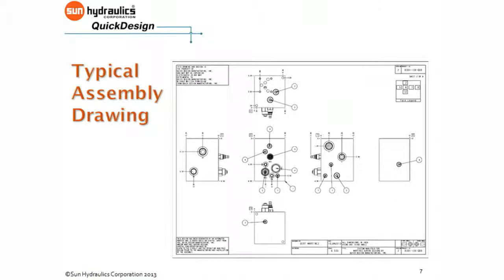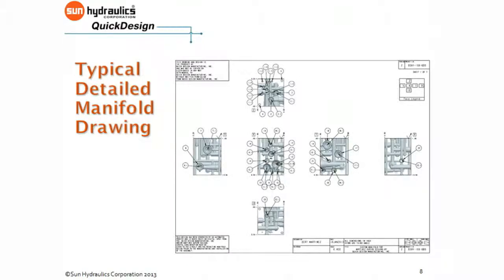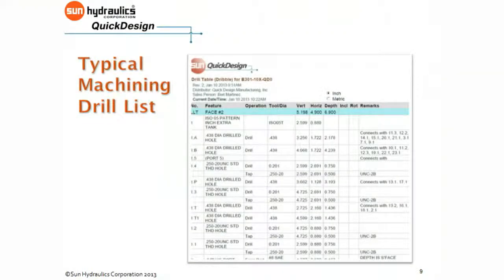Deliverables of Sun Quick Design are complete and include everything you need to determine suitability of the design and control of your manufacturing choices. Deliverables include a full set of assembly drawings as well as a full set of body drawings so you can see the internal passageways inside the block. Outputs also include a drill list that provides all the information needed to manufacture the manifold, as well as a variety of 2D and 3D CAD files to use in your environment.